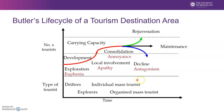For right now let's not worry so much about the bottom here. Drifters, explorers, and mass tourists — both individual and organized — will be discussed in your readings. The words in red — euphoria, apathy, annoyance, and antagonism — are actually part of Doxey's Irridex.